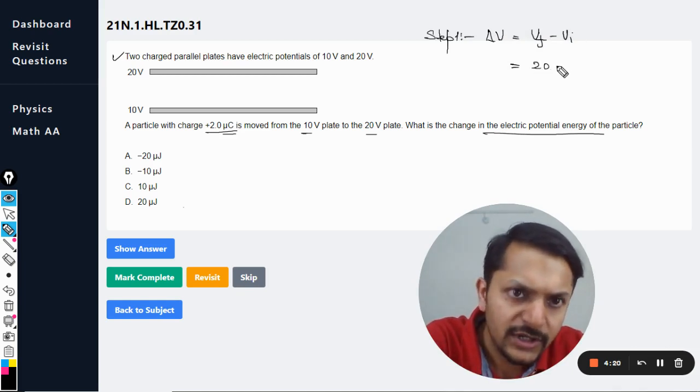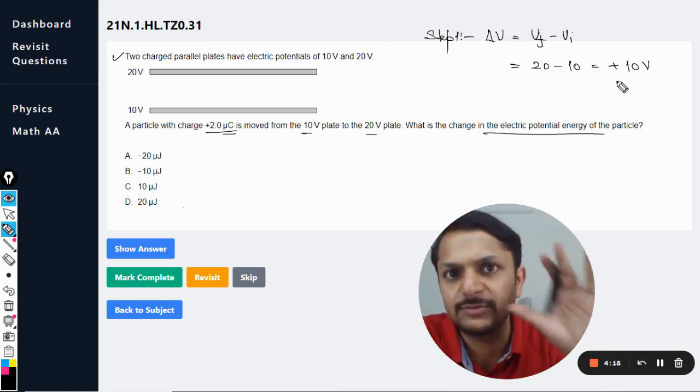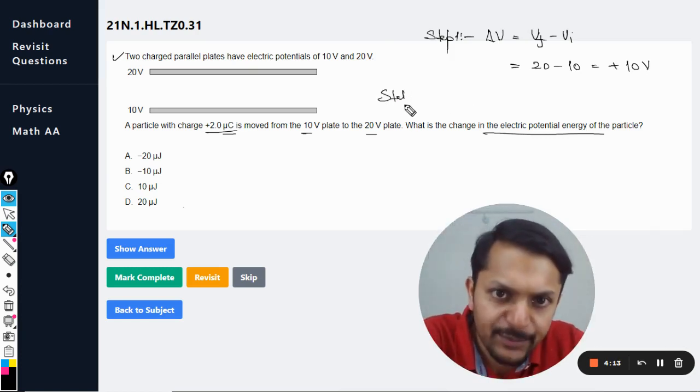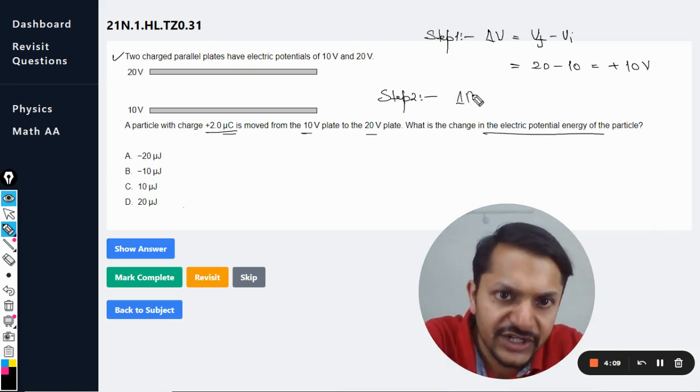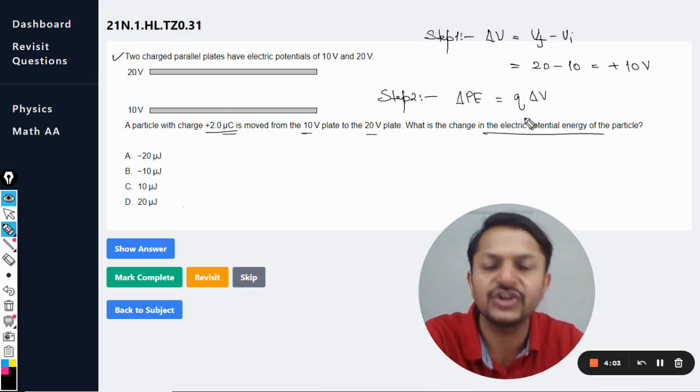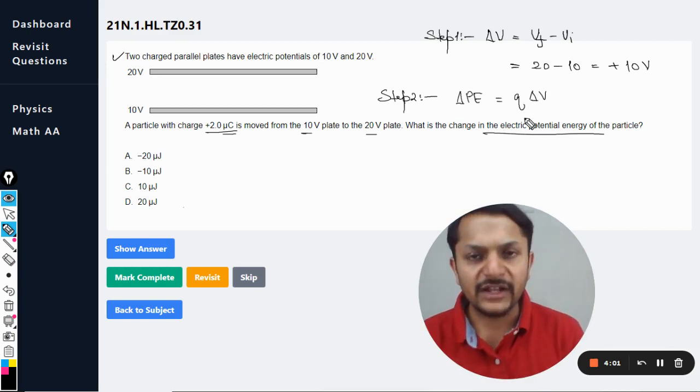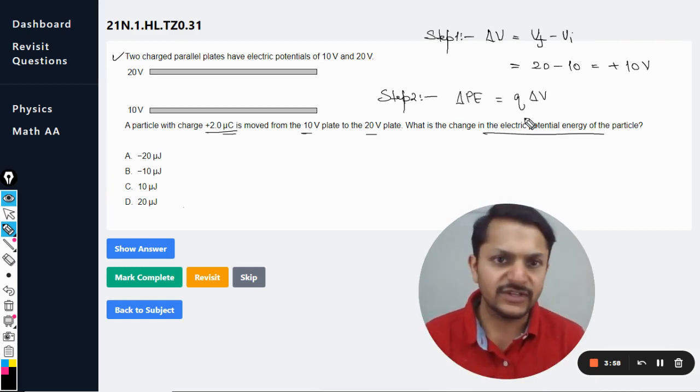and the initial is 10 volt, so it is positive 10 volt, the total change in potential. Now step two, we need to find the total change in the potential energy. And the total change in potential energy is found when we multiply the charge with the total change in potential without removing any negative or the positive sign.